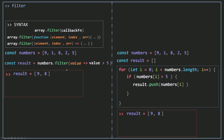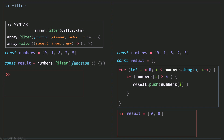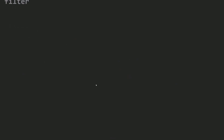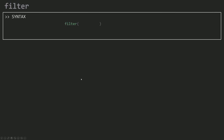Sometimes when using the filter method, when you pass the function, you forget to return a condition at the end. When you pass a function without returning a condition, that will result in getting an empty array.